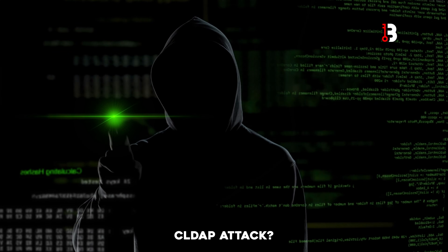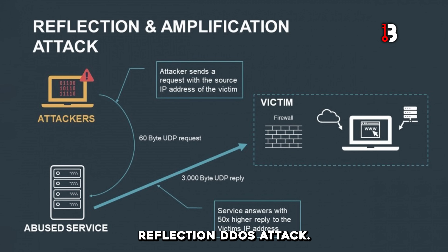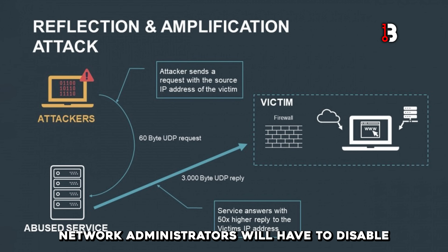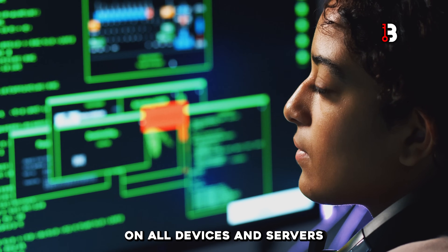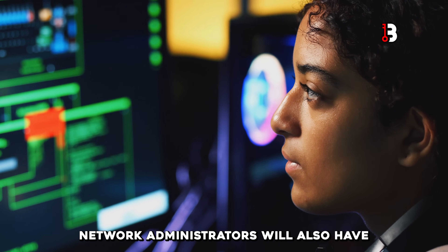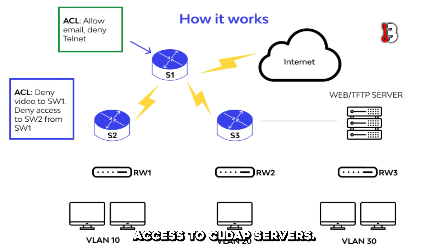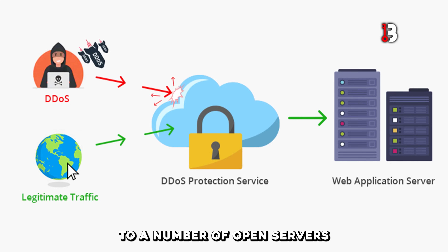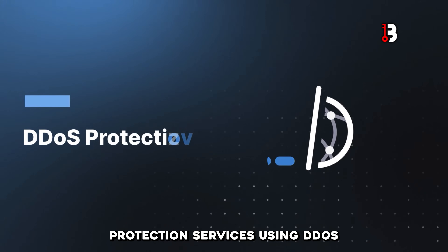How do you protect against the CLDAP attack? There are several steps you can take to protect your network from a CLDAP reflection DDoS attack. Network administrators will have to disable the CLDAP protocol. If you do not use the LDAP or CLDAP protocol, it is recommended that you disable it on all devices and servers facing the internet to prevent attackers from exploiting its weaknesses. Network administrators will also have to implement Access Control Lists, ACLs.